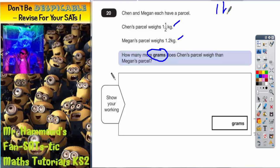Well, in one kilogram, you need to know that that is 1,000 grams. So 1.5 kilograms—the one is going to be 1,000, and the half is going to be an extra 500, because half of a thousand is 500. So you've got 1,000 plus 500, so Chen has actually got 1,500 grams.